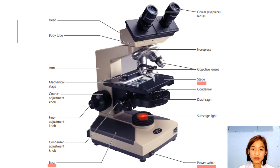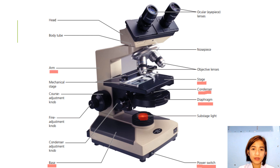One component called the condenser is found directly under the stage and contains two sets of lenses that collect and concentrate light as it passes upward from the light source into the lens system. The condenser is equipped with an iris diaphragm, a shutter controlled by a lever used to regulate the amount of light entering the lens system. Above the stage and attached to the arm of the microscope is the body tube, which houses the lens system that magnifies the specimen. The upper end of the tube contains the ocular or eyepiece lens.